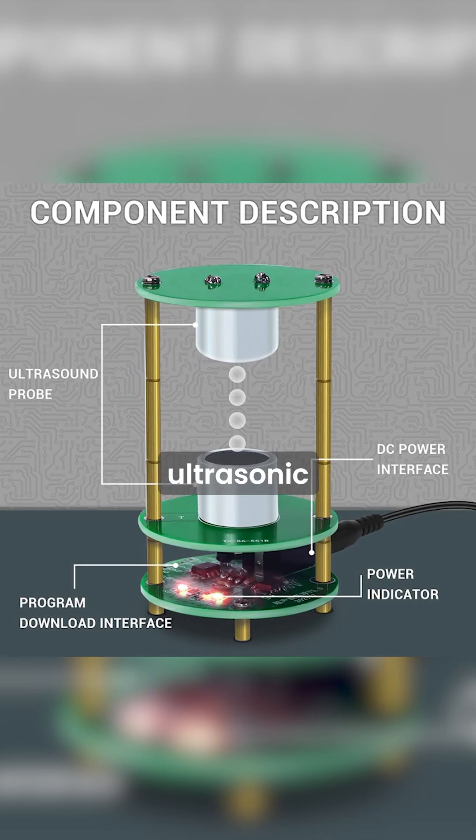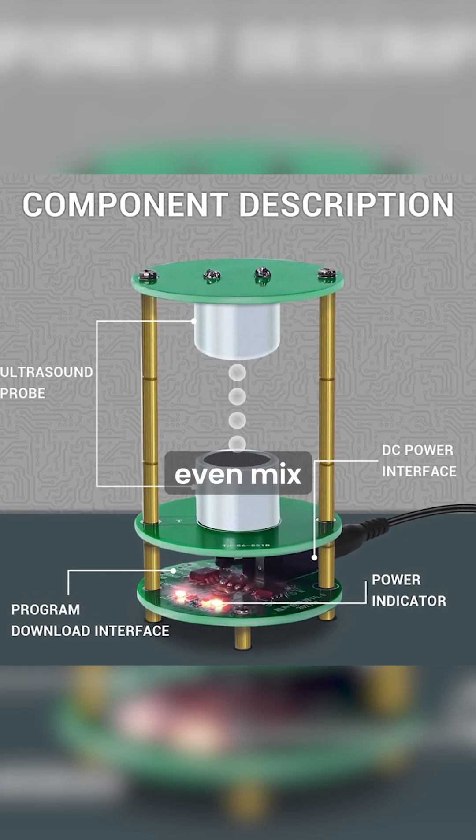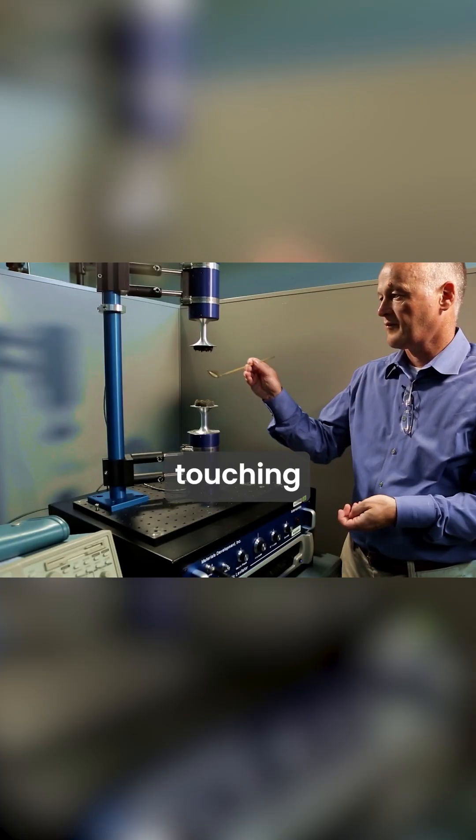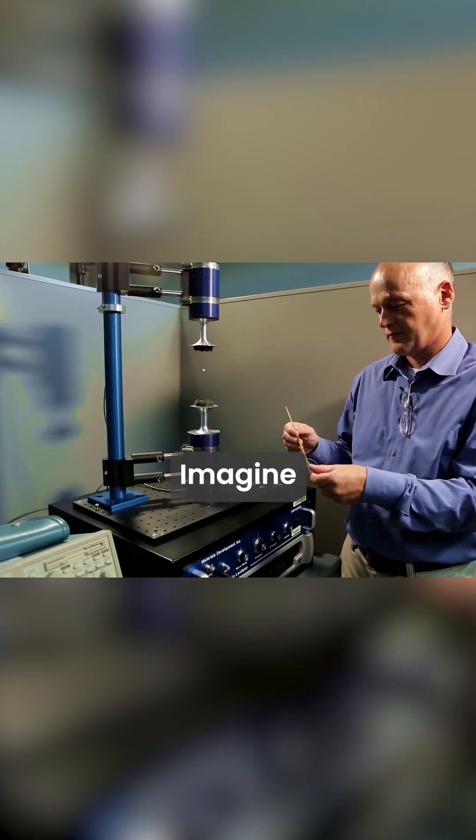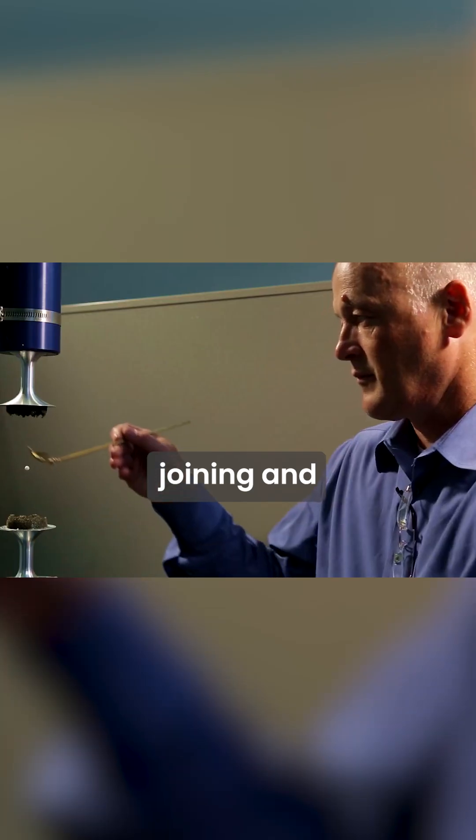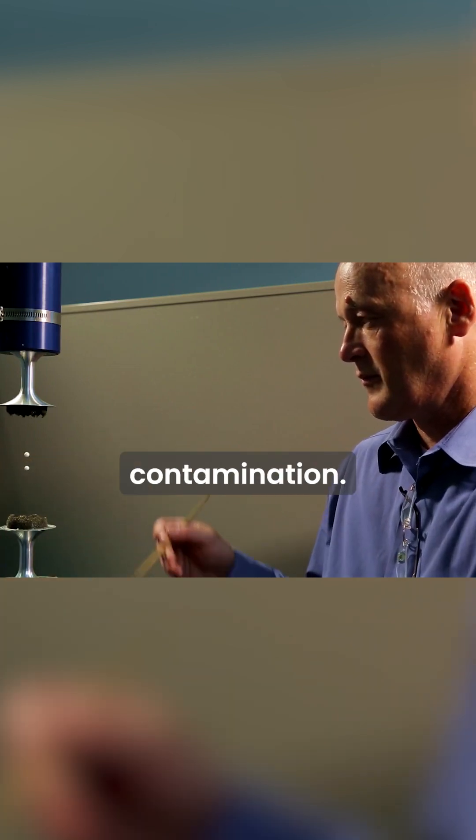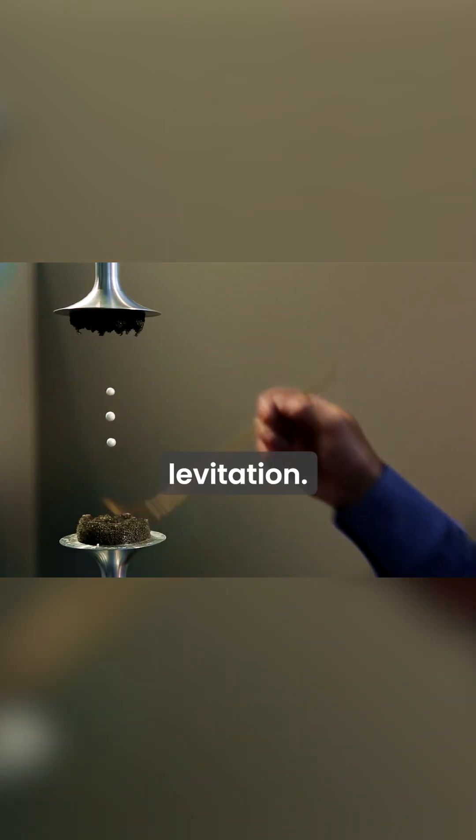It uses ultrasonic sound waves to make tiny droplets float in the air and even mix them together, without ever touching glass or metal. Imagine droplets hanging in midair, joining and reacting—no bottle, no spoon, no contamination. That's acoustic levitation.